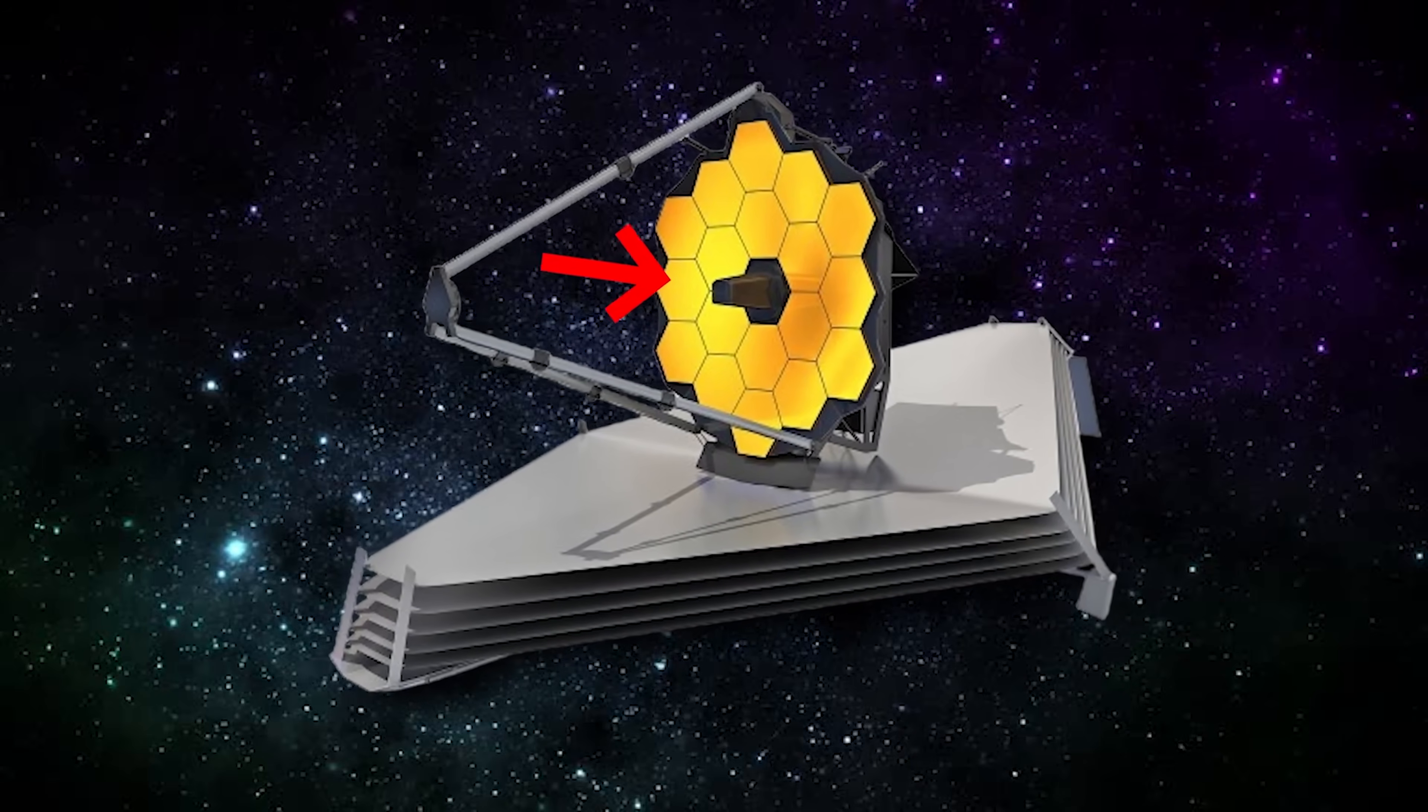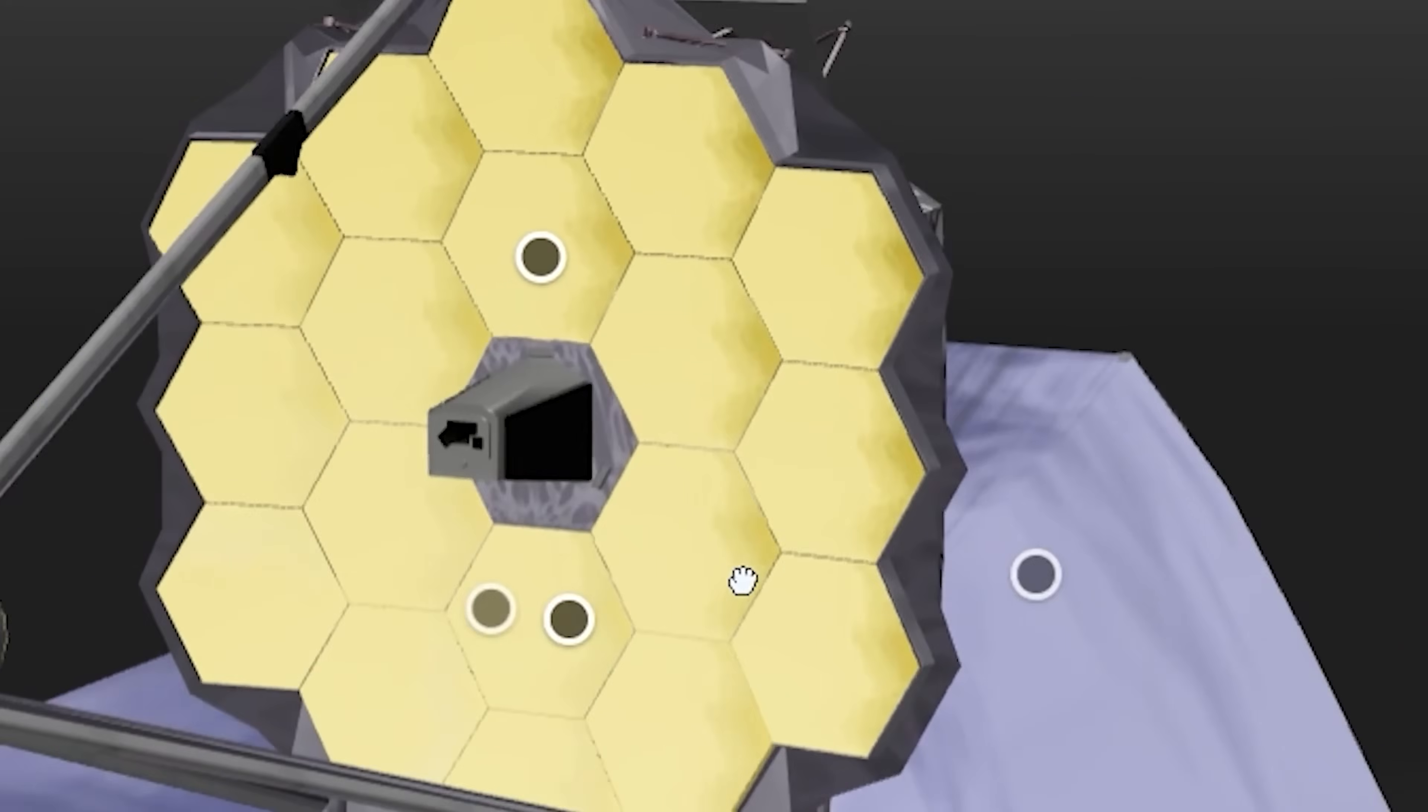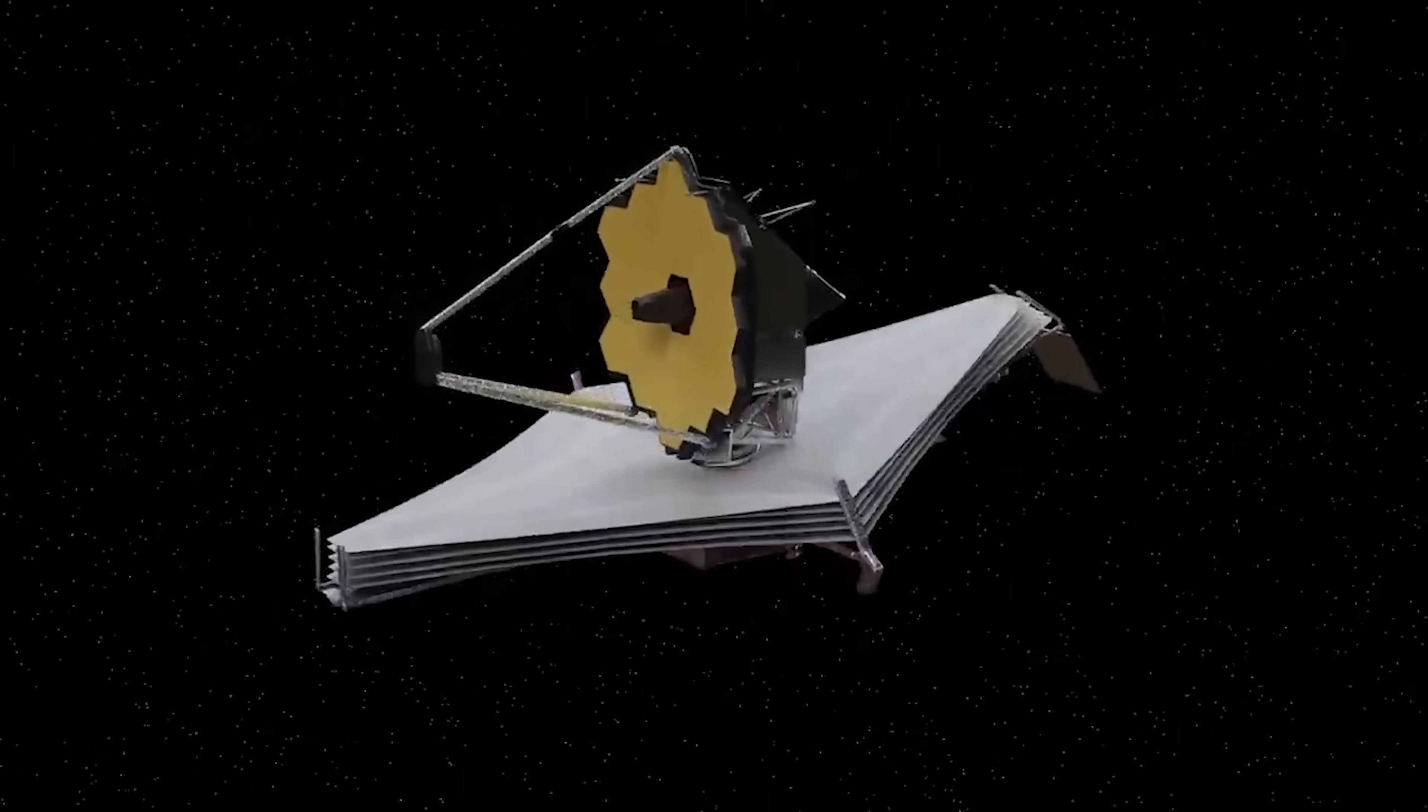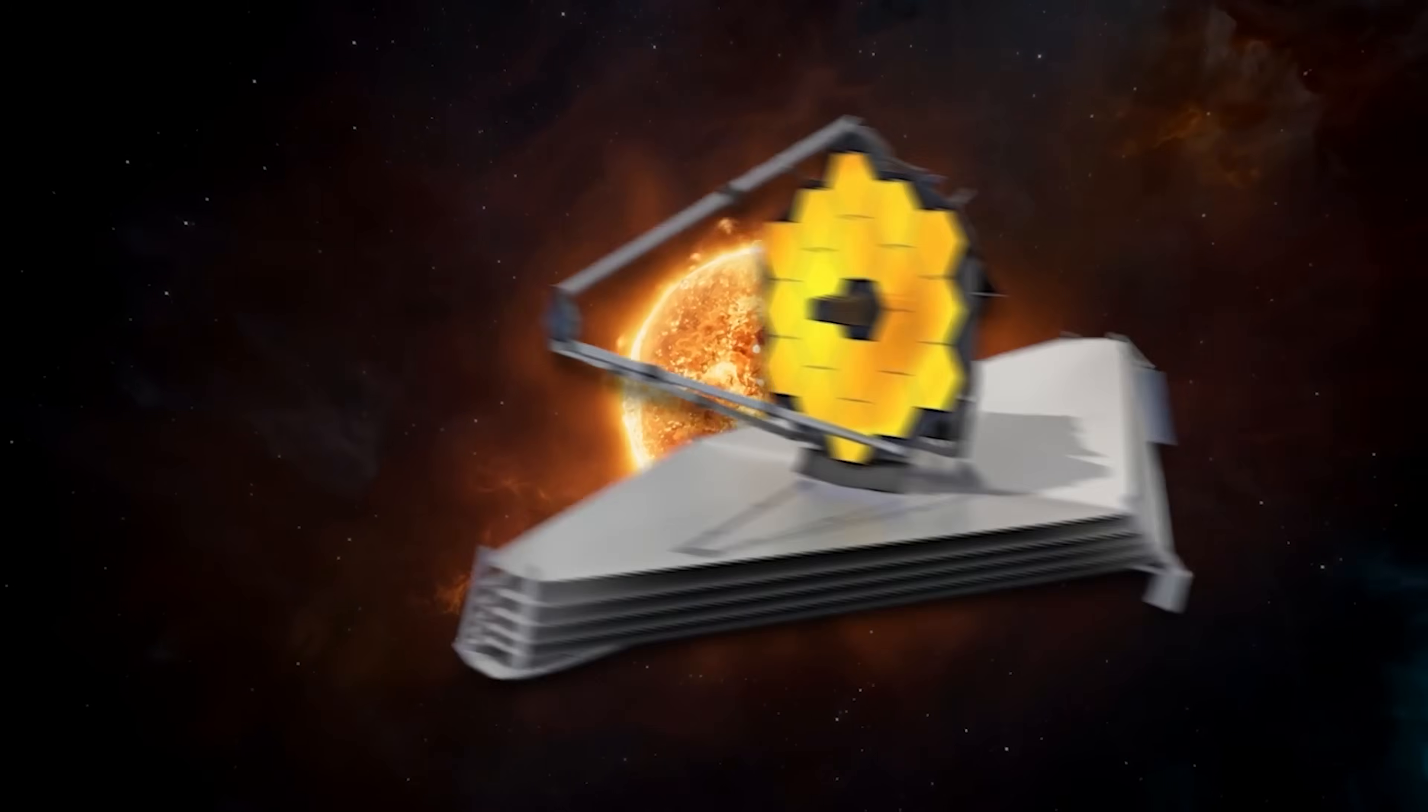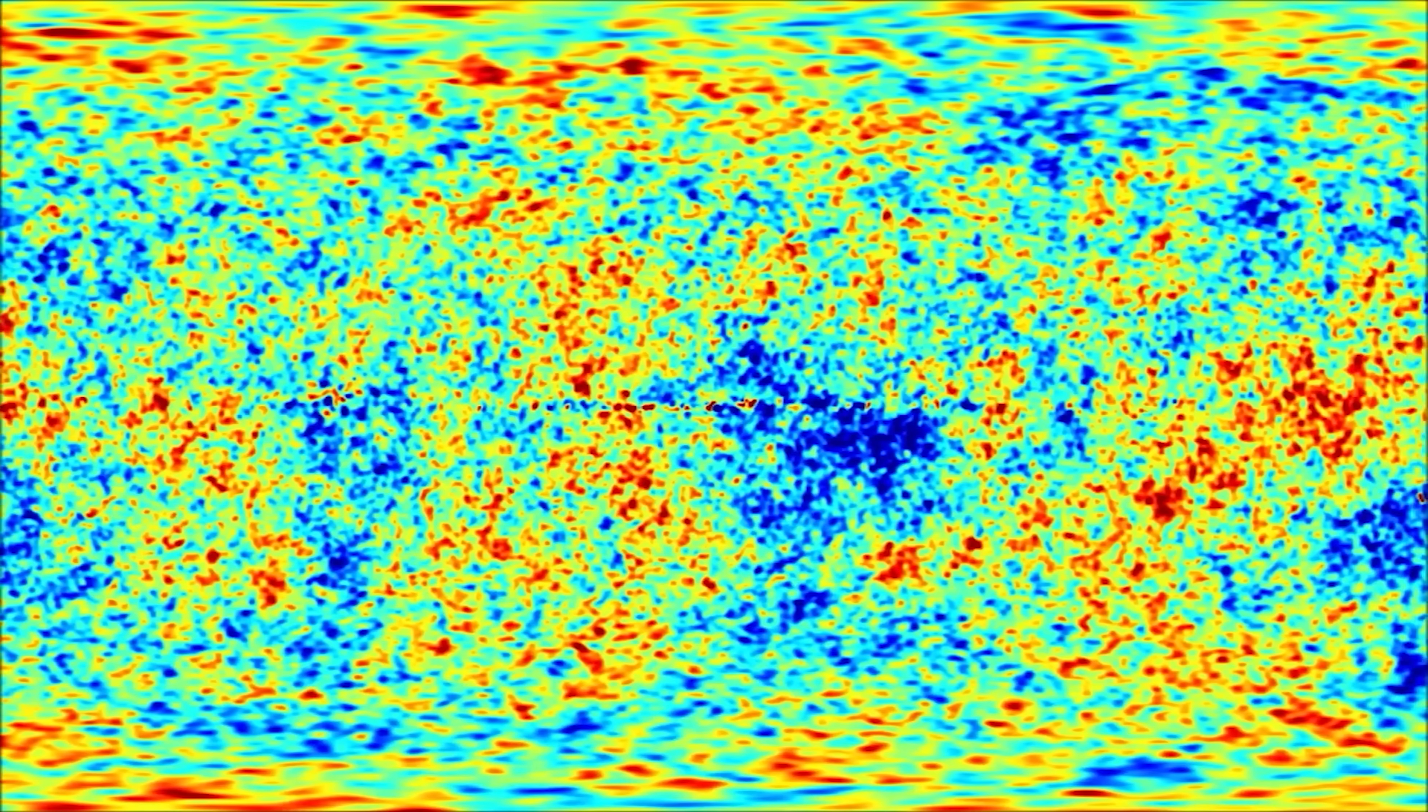The Webb Telescope is a groundbreaking achievement in science and engineering. Its 6.5-meter primary mirror gathers more light than any previous telescope, while its four infrared instruments allow it to study the universe in ways no other observatory can. Positioned at the second Lagrange point, Webb orbits the sun in step with Earth, avoiding interference from our planet's atmosphere and heat.